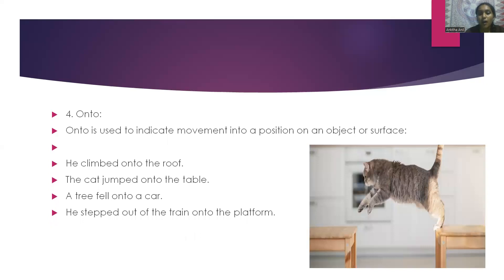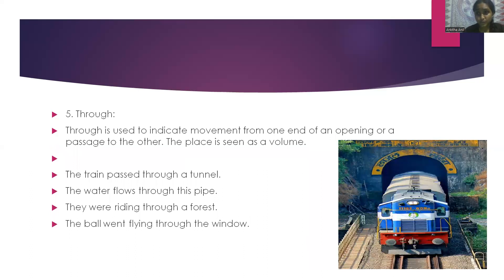The next word is 'onto'. Onto is used to indicate movement into a position on an object or surface. For example: she climbed onto the roof. The cat jumped onto the table. The next word is 'through'. Through is used to indicate movement from one end of an opening or a passage to the other, where the place is seen as a volume. For example: the train passed through a tunnel. The water flows through the pipe.